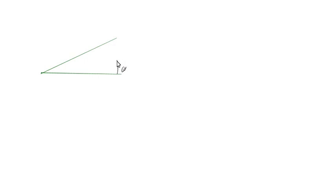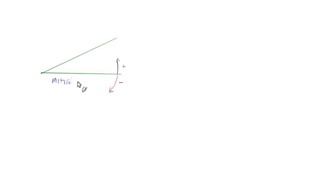Now let's make sure we understand a few things. If I were to start here and measure counterclockwise, that would be the positive direction. If I were to start here and measure clockwise, that would be the negative direction. The side that you start your measurement on is called the initial side, and the side that you stop or terminate your measurement is called the terminal side.